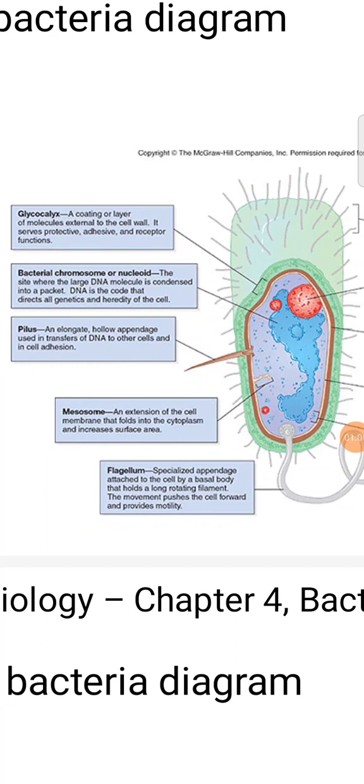Glycocalyx serves protective, adhesive, and receptor functions. The bacterial chromosome is the DNA — the code that directs all genes and heredity of the cells. Mesosomes are extensions of the cell membrane that fold into the cytoplasm.